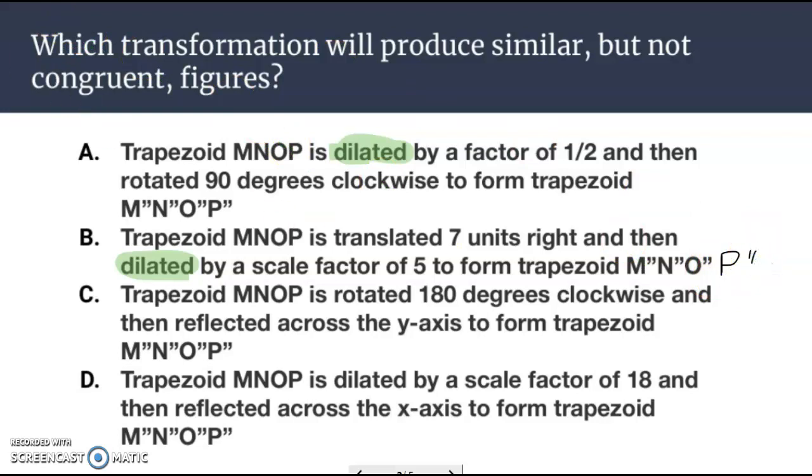C. Trapezoid MNOP is rotated 180 degrees clockwise and then reflected across the y-axis. Don't see the dilation happening in C, but we see it in D here. Trapezoid MNOP dilated by a scale factor of 18 and then reflected. Three correct answers here, everyone. We have A, B, and D. Gives us similar figures because they were dilated.